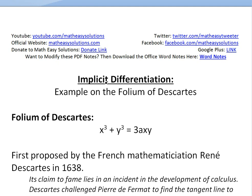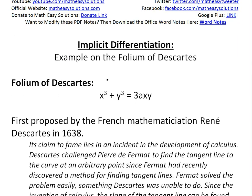Hi, it's time for another math easy solution here to discuss another video on implicit differentiation and look at an example on the famous equation, the folium of Descartes. I think that's how you pronounce it, but anyways, in my earlier video I went over an introduction on implicit differentiation and also an example, so make sure to watch those videos in the video links below.